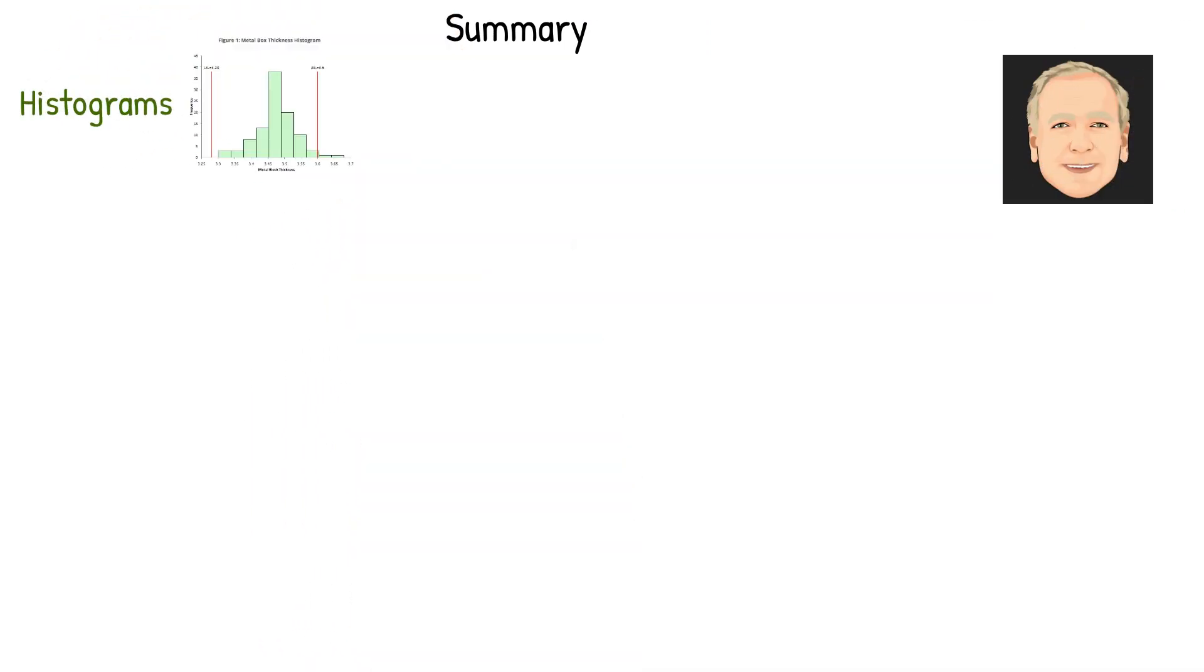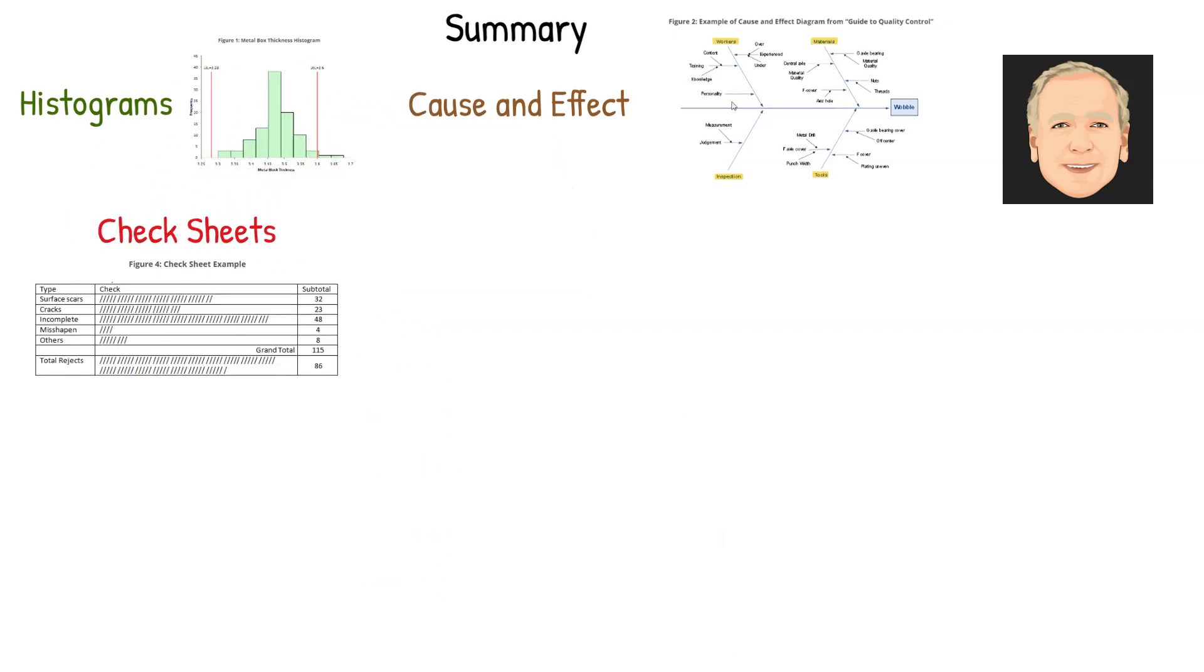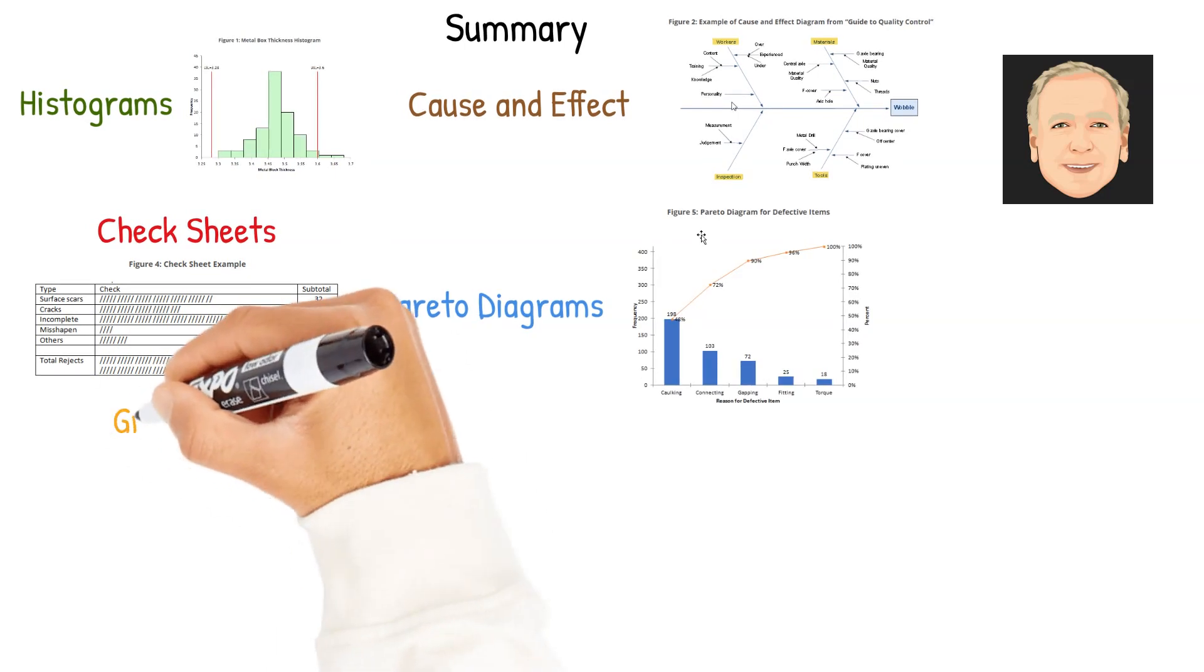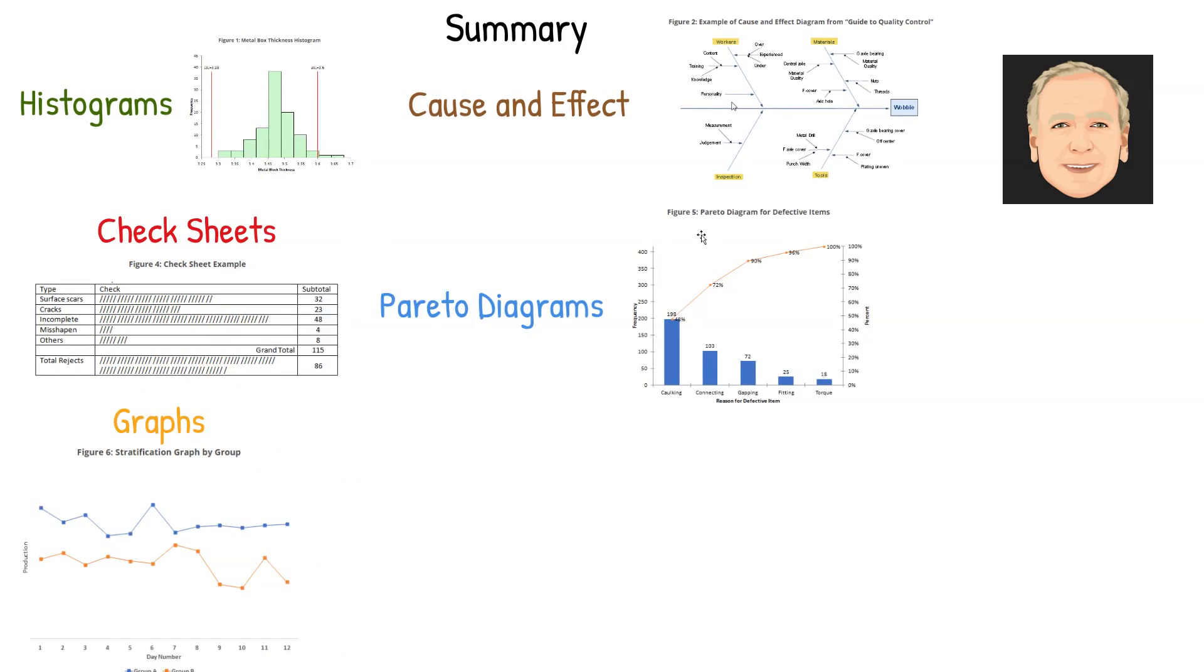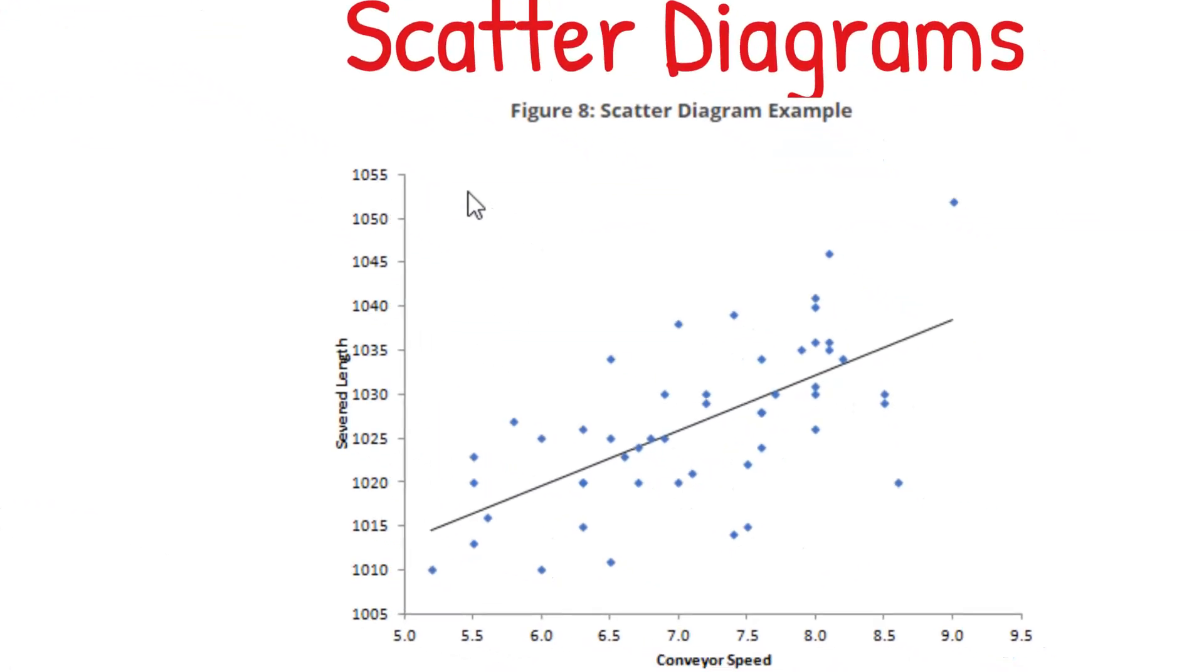So in summary, we've quickly introduced the seven simple basic quality tools: histograms for variation, cause and effect for reason for that variation, check sheets to look for reasons for defects, Pareto diagrams to decide what to work on first, graphs and control charts to see the patterns, and scatter diagrams to look for relationships between two variables.